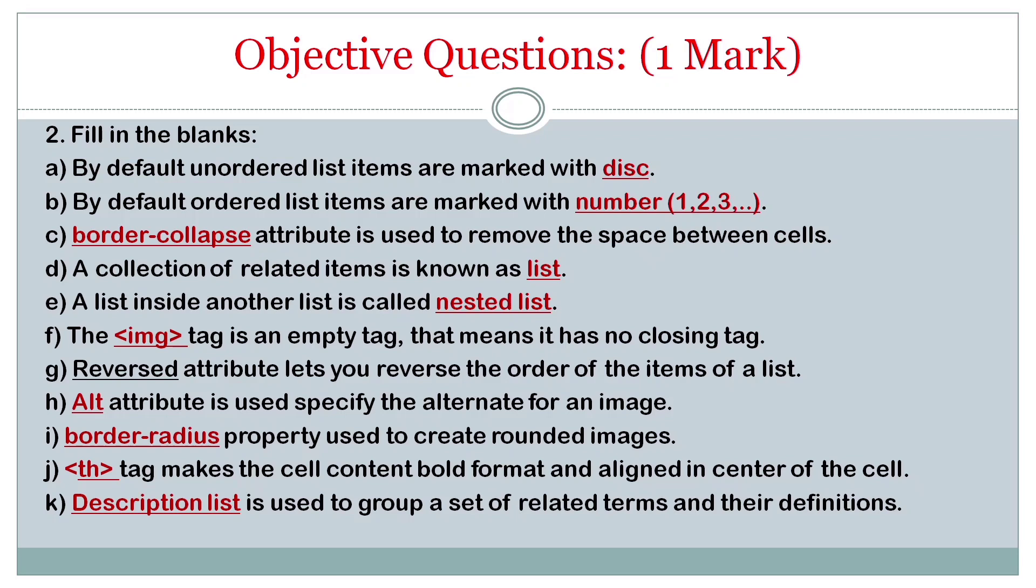By default ordered list are marked with number such as 1, 2, 3. Border-collapse attribute is used to remove the space between cells. A collection of related items is known as list.